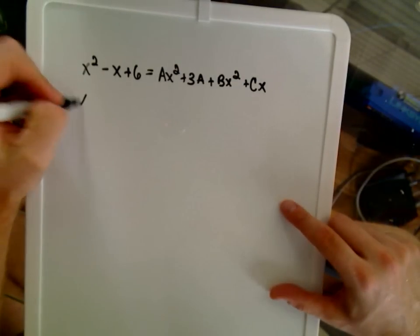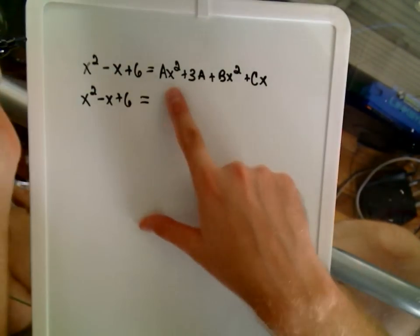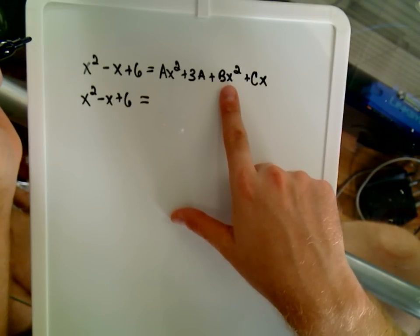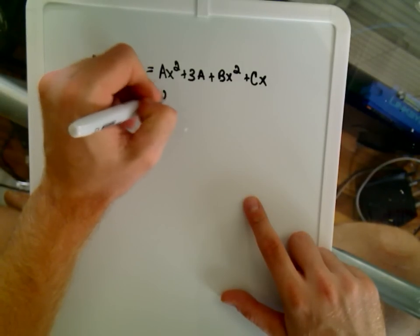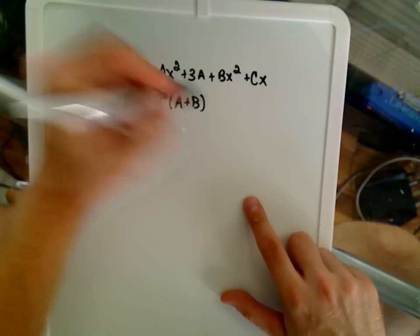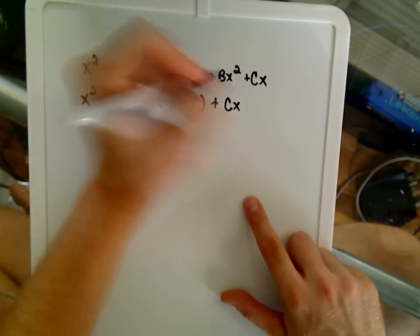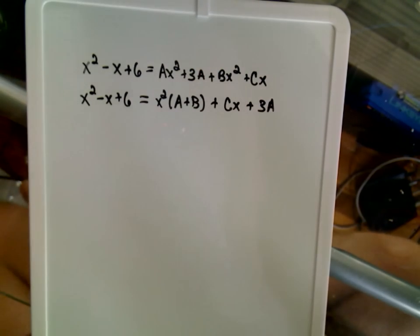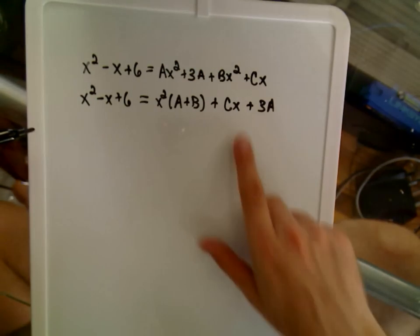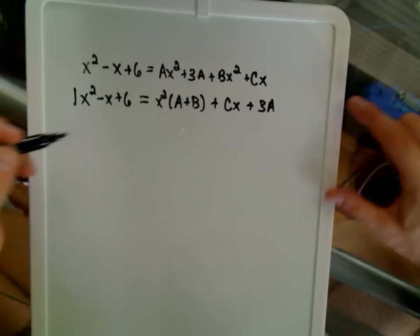So if I just collect all my like terms on the right-hand side, I'm going to group my x squared terms together. So I'm going to get an Ax squared and a Bx squared, and I'll factor the x squared out, so I'll be left with A plus B. And then I'm left with a Cx term, and then a 3A term. Okay, so again, if you look at the coefficients, this is where we do the equating of the coefficients.